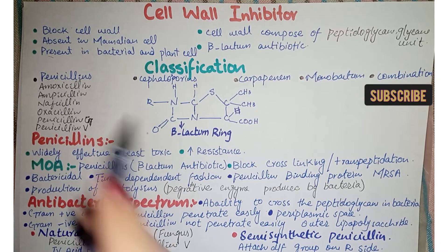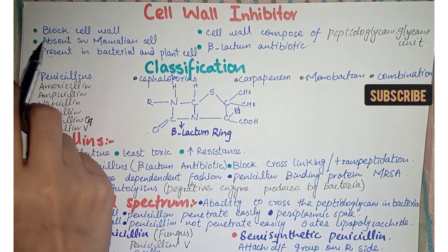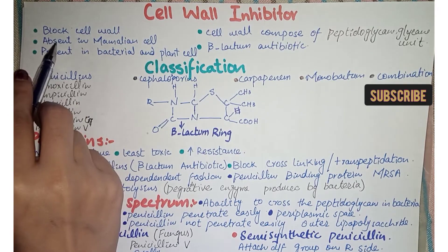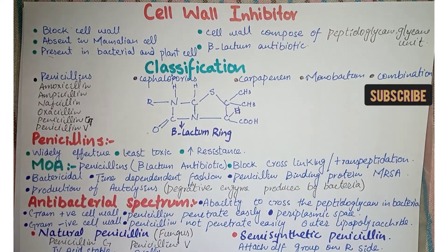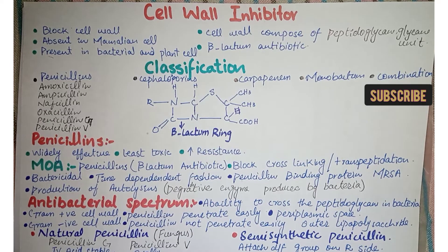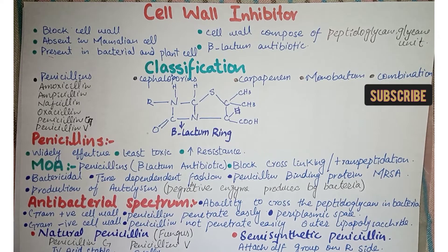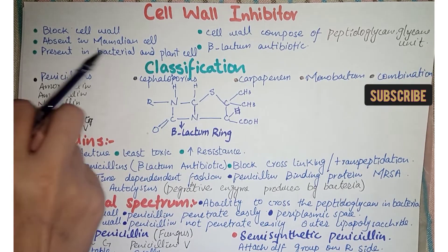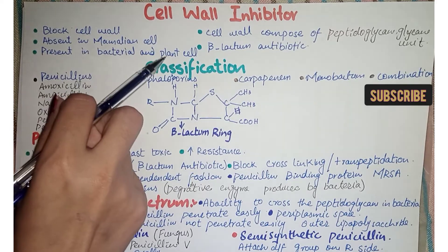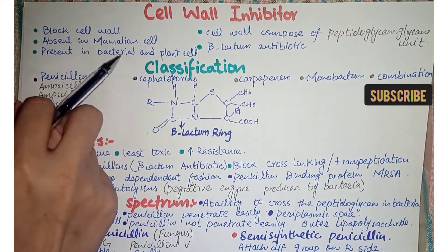Cell wall is absent in mammalian cells — jo mammalian cells hote hain unme cell wall absent hoti hai. Whereas cell wall is present in bacterial and plant cells.